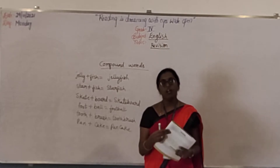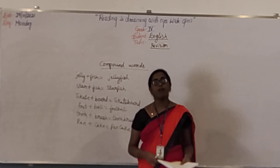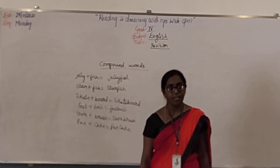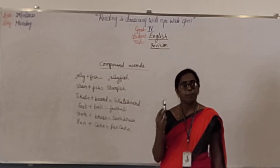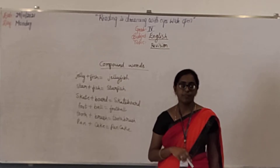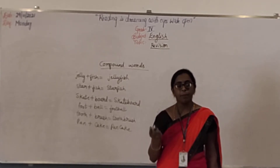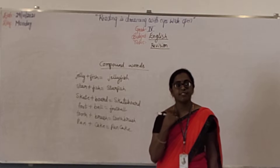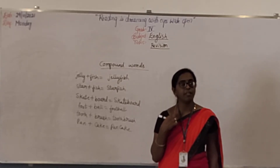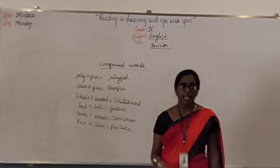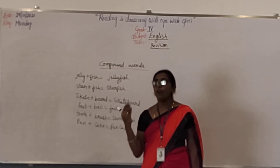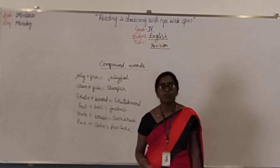Now we have countable and uncountable nouns. Countable nouns can be counted. Example like marker, pen, eraser, paper, chairs, table — all of these can be counted. So those are called countable nouns.